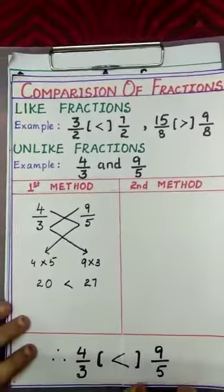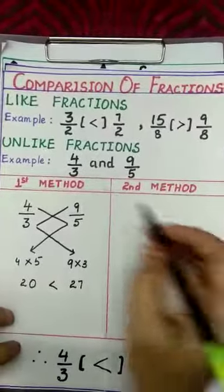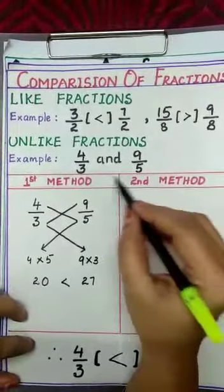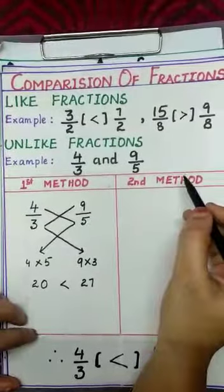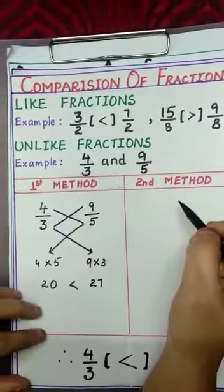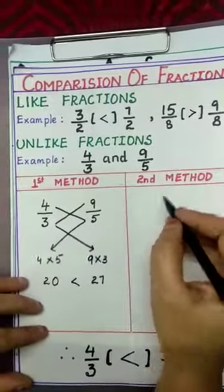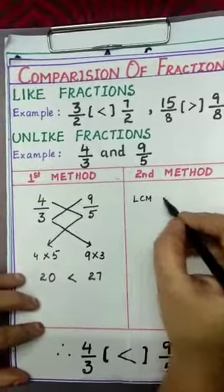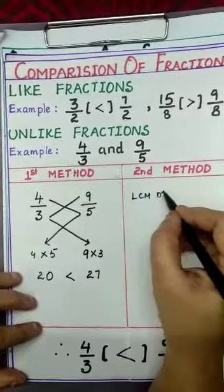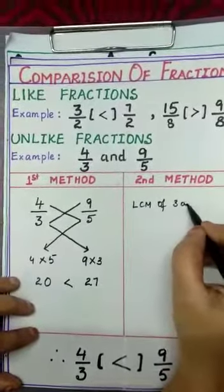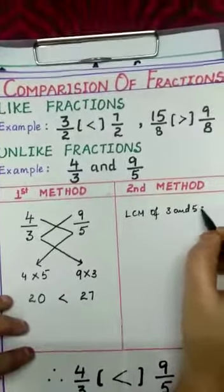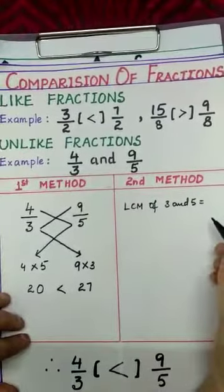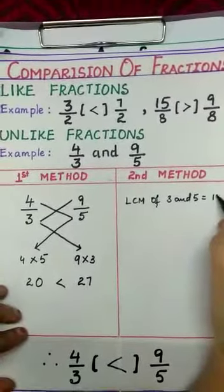This is the first method. In the second method, since 4/3 and 9/5 are unlike fractions, we convert them into like fractions and then compare. For that, we first find the LCM of the denominators — the LCM of 3 and 5. Since 3 and 5 have no common factor, the product is the LCM: 3 × 5 = 15.